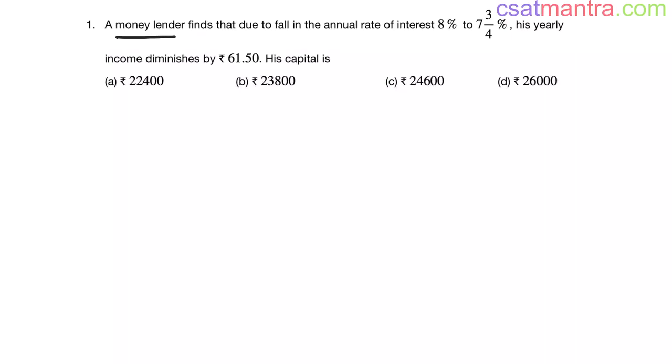A money lender finds that due to fall in the annual rate of interest, 8% to 7 and 3/4%, his yearly income diminishes by 61.50 rupees. His capital is.